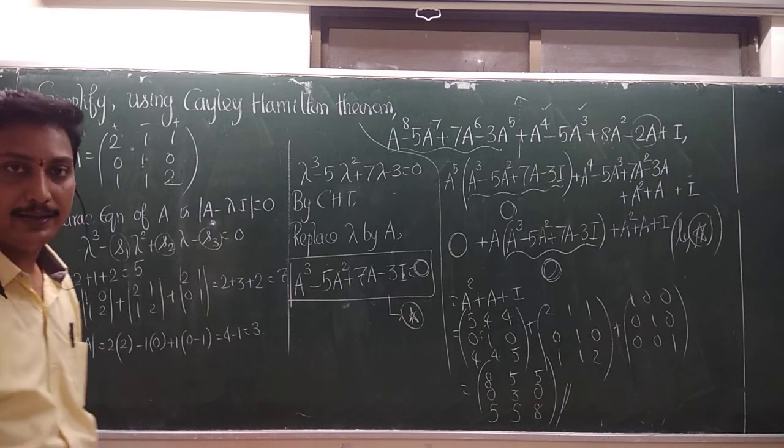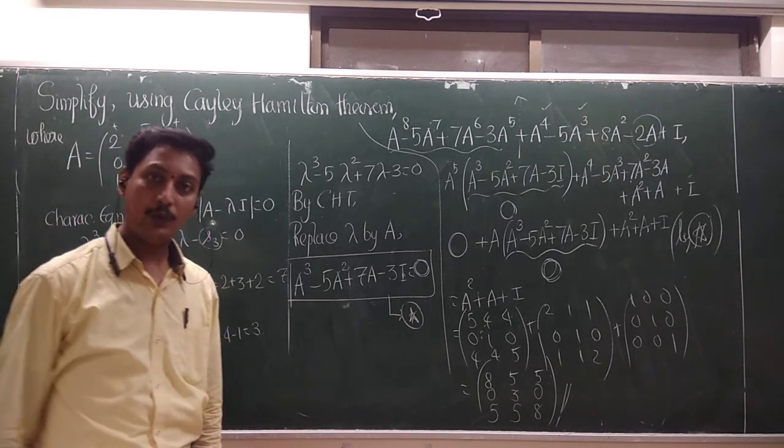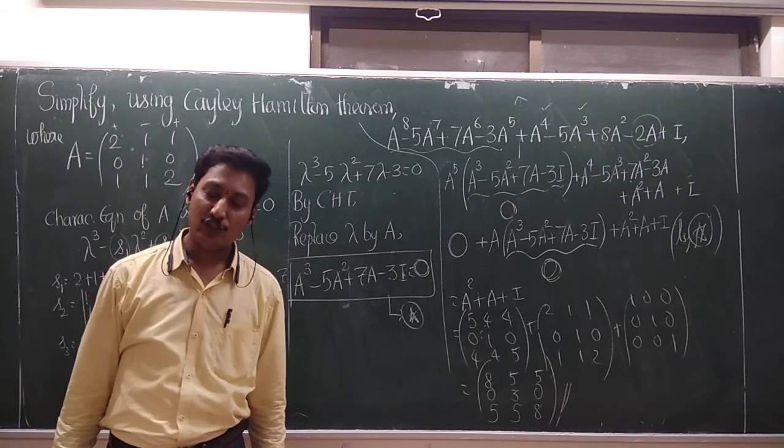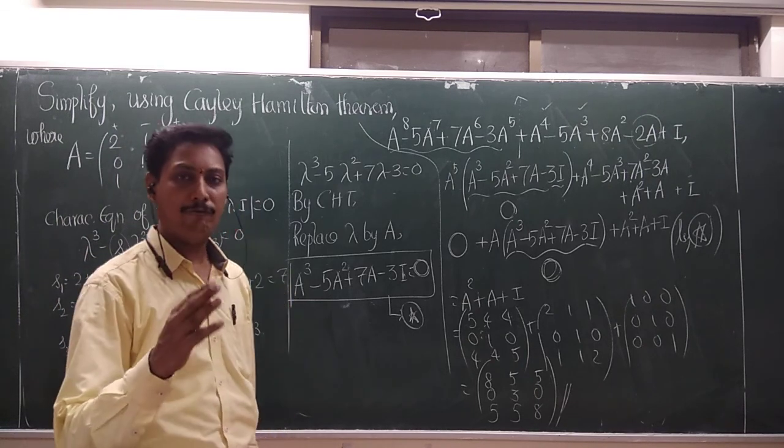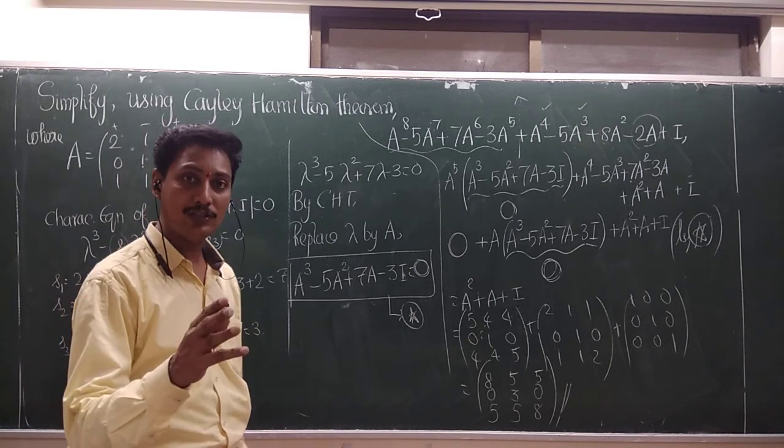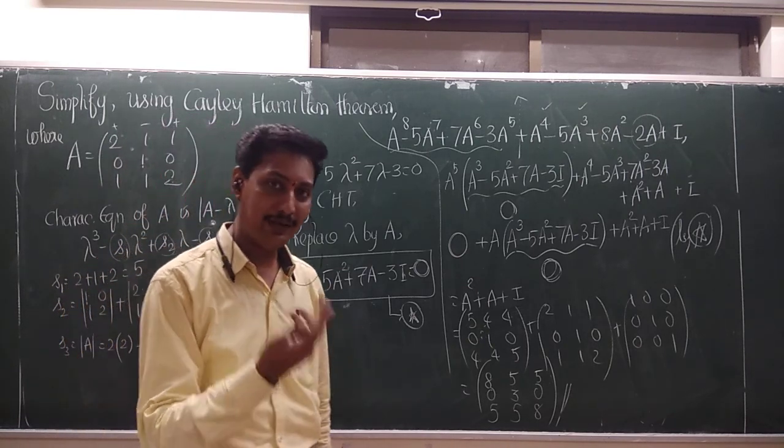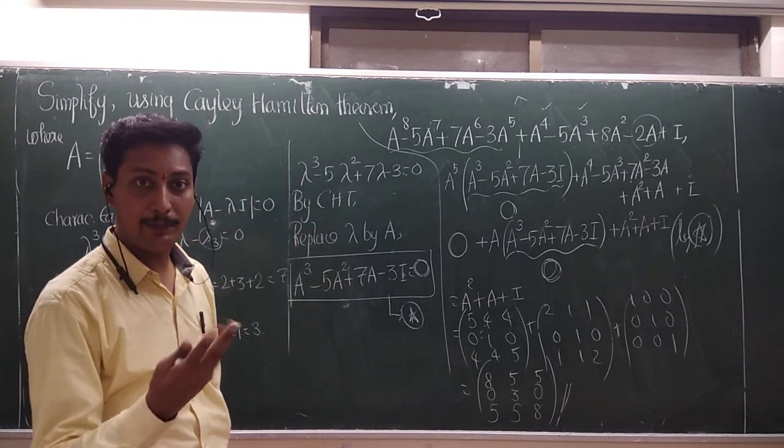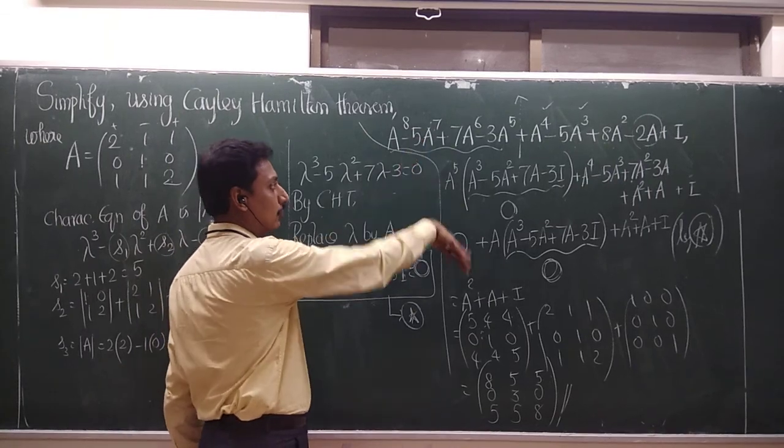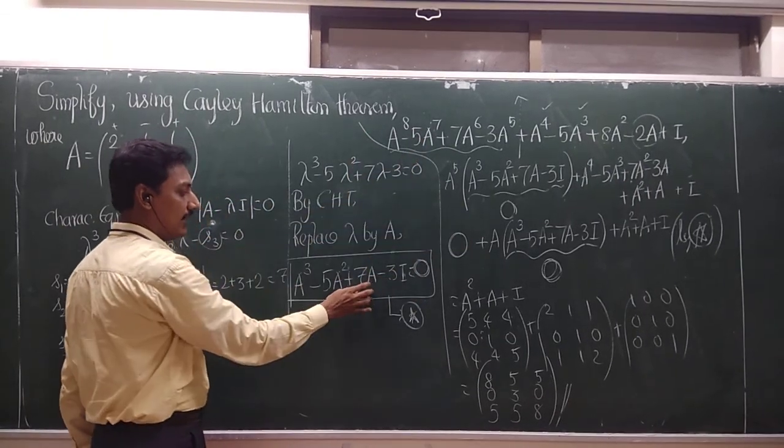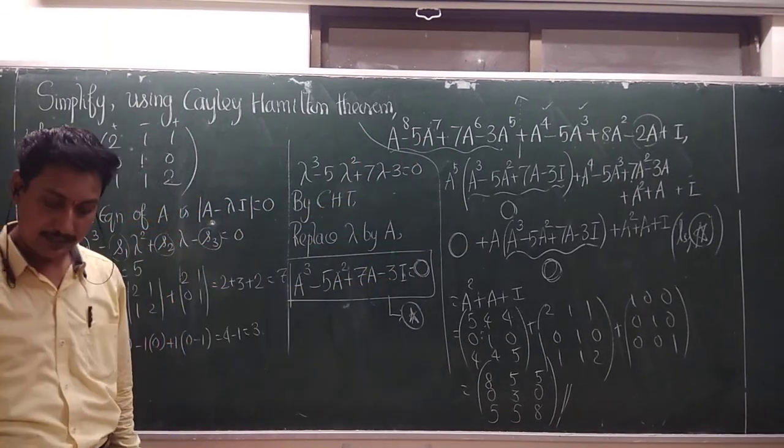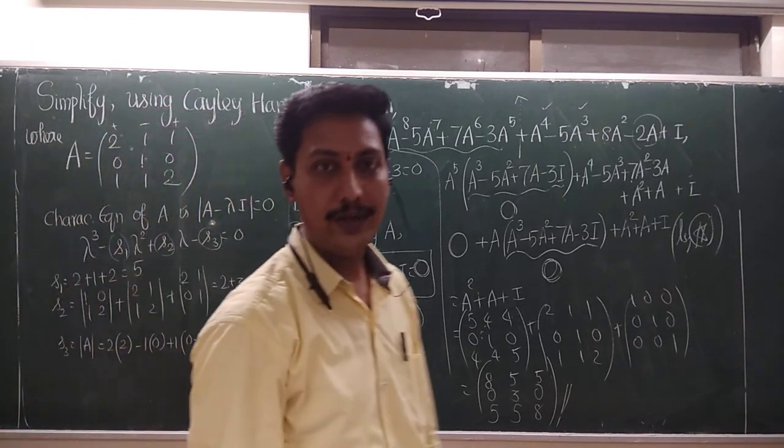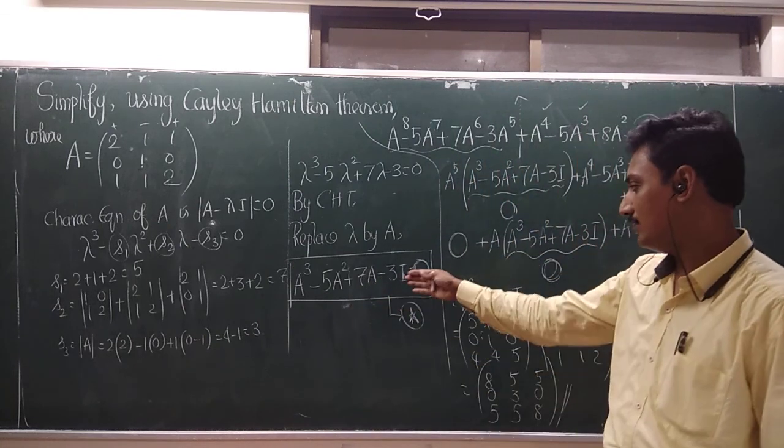I hope you understand the significant application of the Cayley-Hamilton theorem. This is the very must and important tool in the matrices. We cannot find even A power 3, A power 4, A power 5, A power 6, A power 7, A power 8. But just reduce this into, let us simplify this with the help of this Cayley-Hamilton theorem. Because Cayley-Hamilton theorem says that every square matrix satisfies its own characteristic equation.